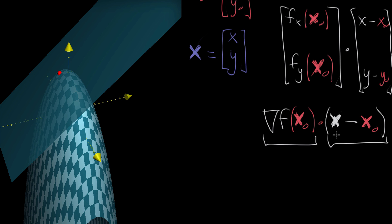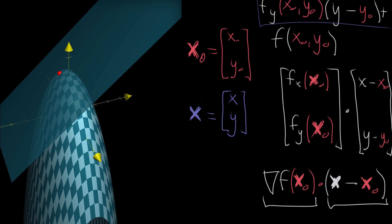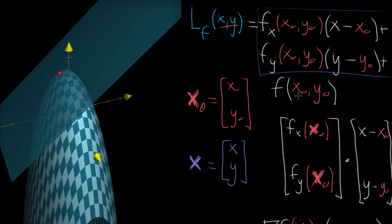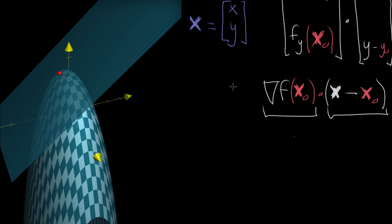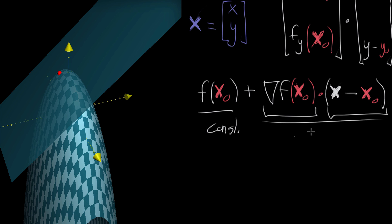This dot product is what a linear term looks like in vector terminology, because all components of the bold-faced x vector are just being multiplied by some constant. So the full local linearization is: f(x₀) plus the gradient of f evaluated at x₀, dotted with (x minus x₀). I like to write f(x₀) first as the constant term, with the dot product as the linear term — because later you can keep adding quadratic or higher-order terms on the end.